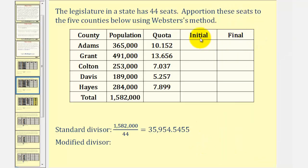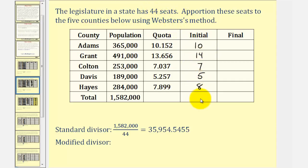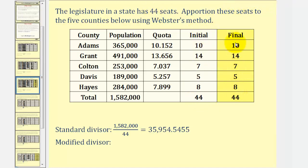Now for Webster's method, for the initial allocation, we round the quota to the nearest whole number. If we have a five or more in the tenths place value, we round up; four or less, we round down. So the first quota rounds down to 10, the second rounds up to 14 because of the six, here we round down to seven, here we round down to five, and here we round up to eight. We find this sum and compare it to 44. Here we lucked out because this total is 44, the number of seats we have to apportion, so we are done. Our initial allocation is our final apportionment.